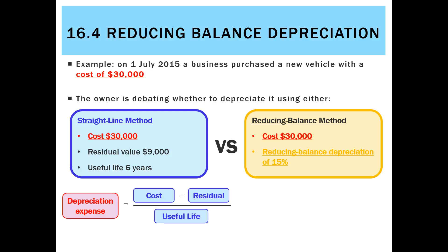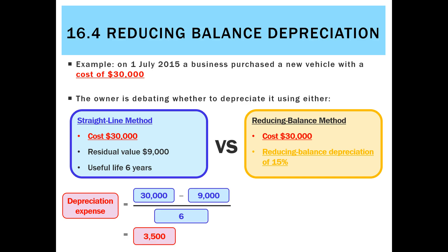We already know how to calculate straight line. We use our formula, substitute in the cost, the residual value, and the useful life, and we end up with depreciation every year of $3,500. Now, that doesn't really make sense for a car or a delivery van, because it's going to get less efficient in generating revenue as it gets older. So we probably want the alternative method, which is reducing balance.